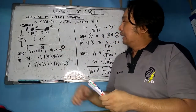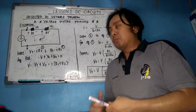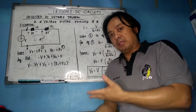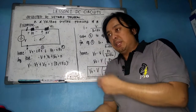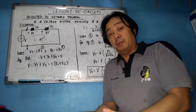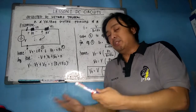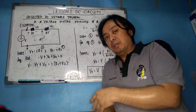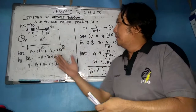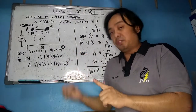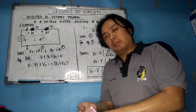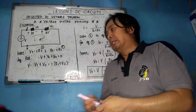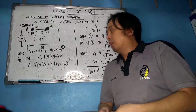Let's move forward to our topic: selected DC Network Theorems. It is 'selected' because these are typical DC Network Theorems you can use as shortcuts. If you use two or three of them, you can solve any problem on DC network circuits. We will discuss the voltage divider principle, current divider principle, Millman's Theorem, Thevenin's equivalent, and Norton's equivalent. Others like mesh, nodal, and superposition will be discussed in the next few lessons.